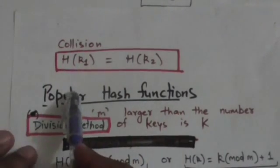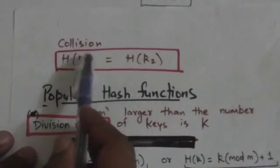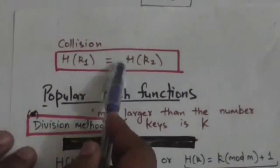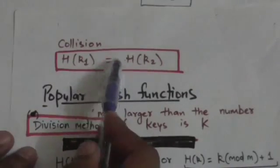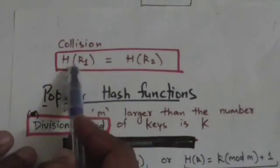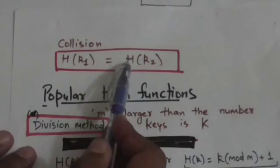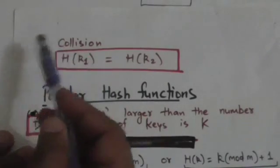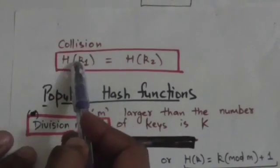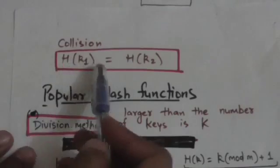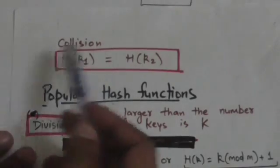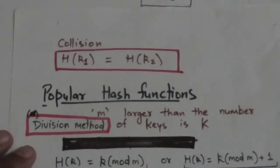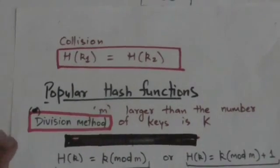It is possible that two different keys have the same hash value for a particular hash function. This situation is called a collision. How we can resolve this problem of collision we will study in the next tutorial.